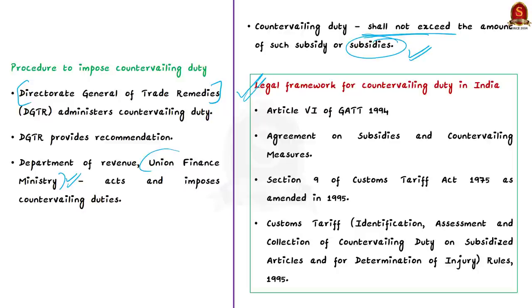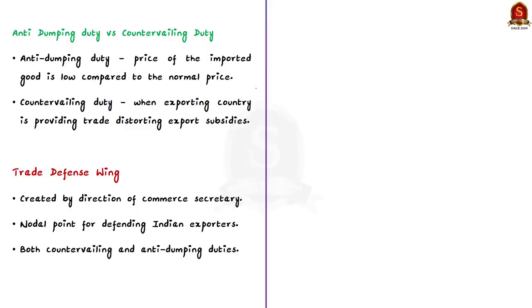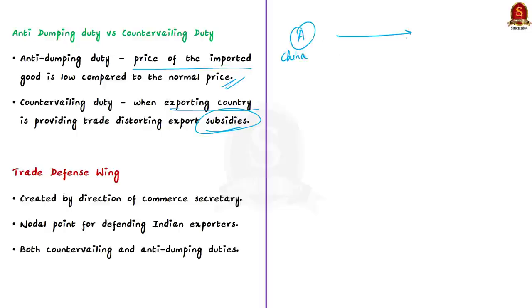The main difference between anti-dumping duty and countervailing duty: anti-dumping duty is applied when the price of the imported good is lower than its normal price, while countervailing duty is applied when the exporting country is providing subsidies to promote export. To understand the difference, consider company A in China exporting oranges to India at ₹100 per kg.